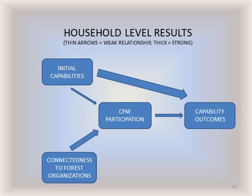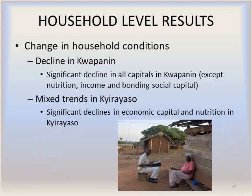With regard to the outcomes, participation in the CFM program had a significant positive effect only on household nutrition levels, which was a measure of human capital. However, each of the types of past levels of capital had a significant positive effect on current levels of capital, suggesting that the past seems to predict the present in spite of participation in the CFM program. The results of the T-test comparing past household conditions with current household conditions showed significant declines in all types of capital assets in Kuapunin, with the exception of levels of nutrition, income, and bonding social capital. The case of Chilee was a bit mixed, but there were still significant declines in economic capital and nutrition over the period.